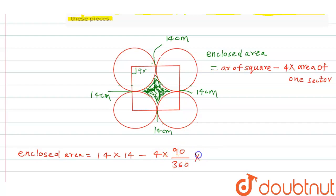No, sorry, r is 7, so 7 squared. This is 7 into 7. So what we have is 196 minus